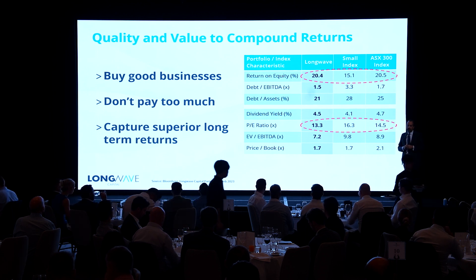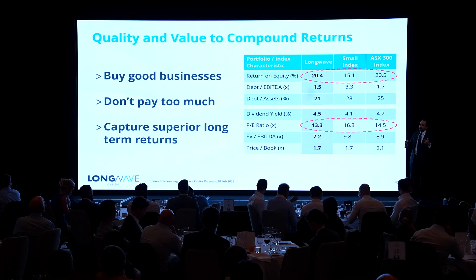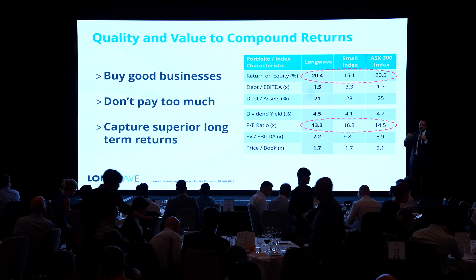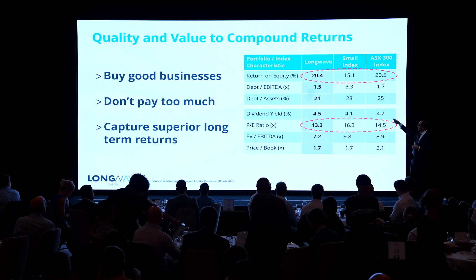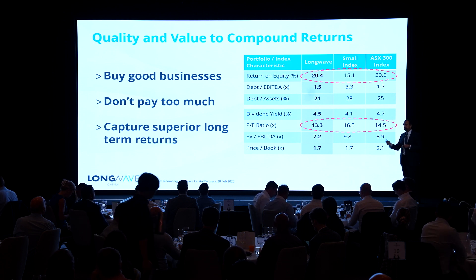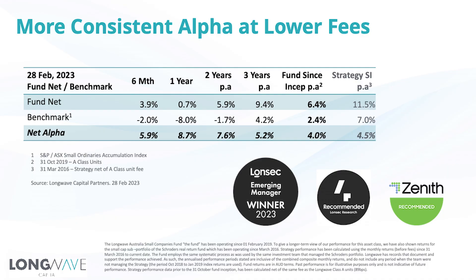Overall, our approach is pretty simple: we try to buy good quality businesses and don't pay too much, diversifying risk across many businesses that meet those characteristics. Our portfolio shows strong quality markers — return on equity, debt metrics, low leverage — and is priced cheaper than the market today despite having better quality characteristics. We think having quality active managers in small caps helps answer the question of 'are we there yet?' by allowing investors to allocate sooner and get the benefits as the market turns, as small caps will eventually outperform again. Thank you.